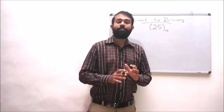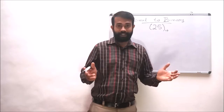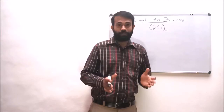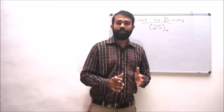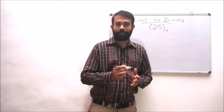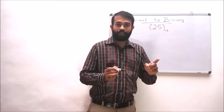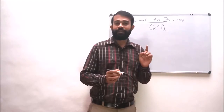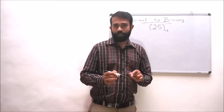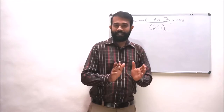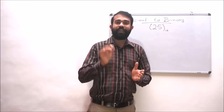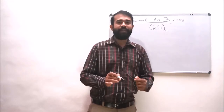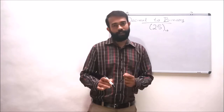As we all know, decimal numbers are the most common number system in our daily life. To convert a decimal number to any other system, we have to continuously divide that particular decimal number by the base of the target number system. Here we are converting to binary, whose base is 2, so we divide continuously until the quotient becomes 1.